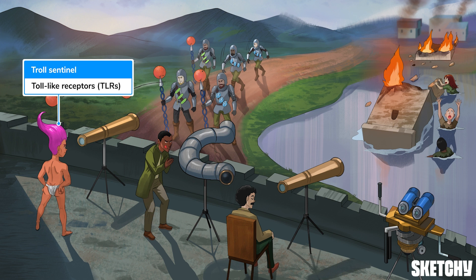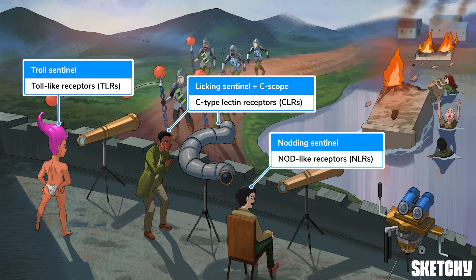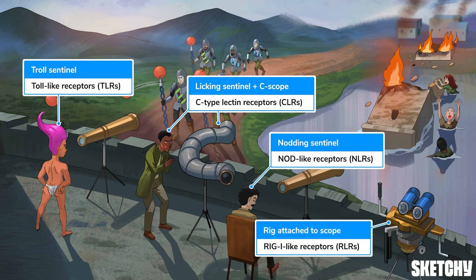First up are toll-like receptors, or for our purposes, troll-like receptors. These TLRs are membrane glycoproteins found in plasma and endosomal membranes of phagocytes, dendritic cells, B cells, and endothelial cells. Next are C-lectin receptors or CLRs — also membrane glycoproteins found in plasma and endosomal membranes just like TLRs. Next to him nodding off is our NOD-like receptor, which is a cytoplasmic pattern recognition receptor. Finally, RIG-like receptors are another type of cytoplasmic receptor, just like the NOD-likes.